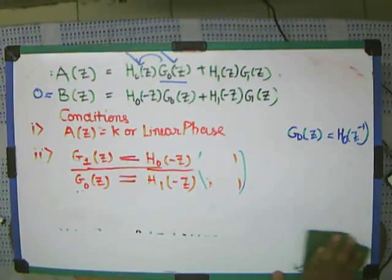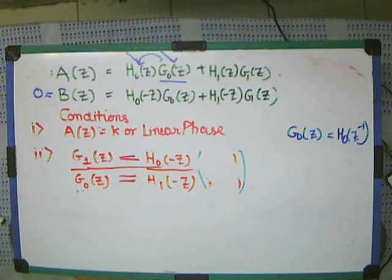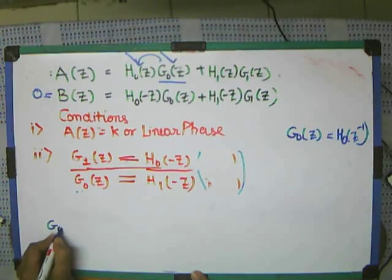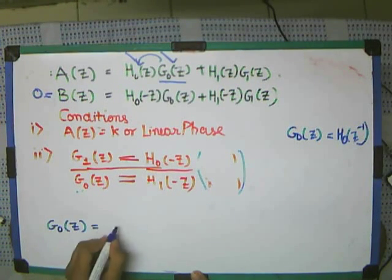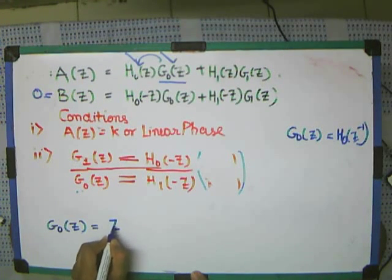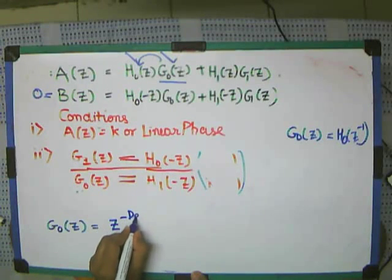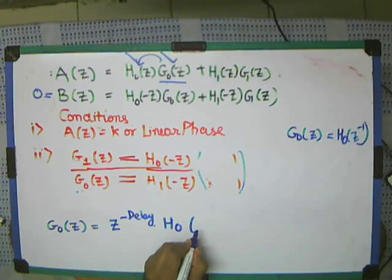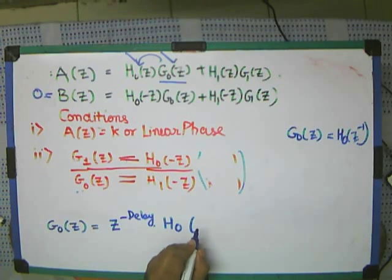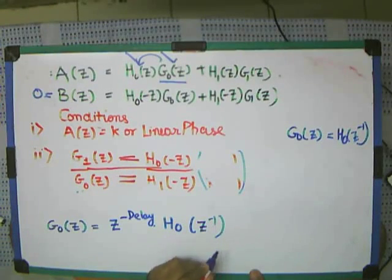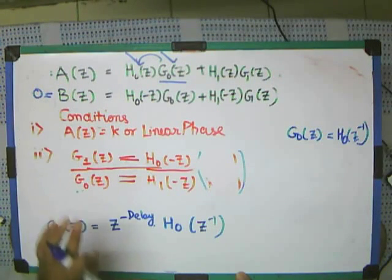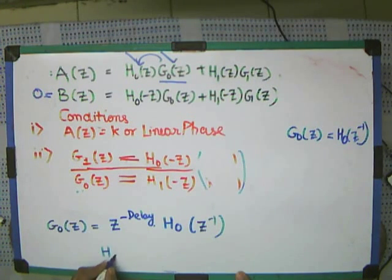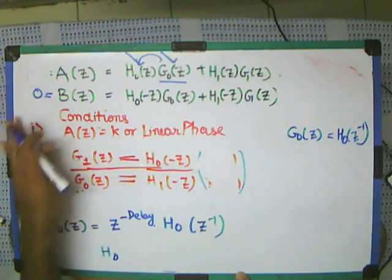This is the standard equation. Now if I take g0(z) equal to some d-length times h0(z⁻¹), and if I substitute into v(z), what I will get is h0(−z). This stuff will become equal to 0. Let's put this equation into this: g0 is something — let me write this as h0(−z). I will try to prove this. So h0(−z), h0(z⁻¹) — this part and this part is same, so with a factor of minus, it will make it 0.